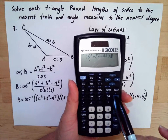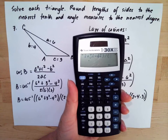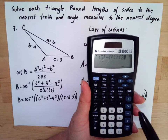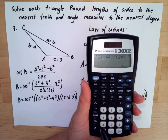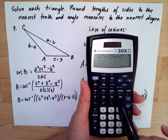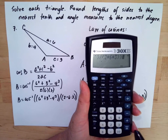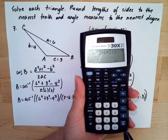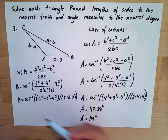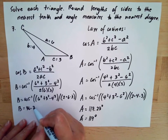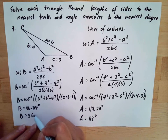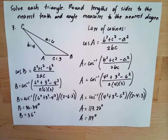Then divide, open another parenthesis for the denominator, enter 2 multiplied by 6 multiplied by 3, close the denominator parenthesis, then close the whole expression and hit Enter. The result is 36.34 degrees. Rounding to the nearest degree, angle B equals 36 degrees.